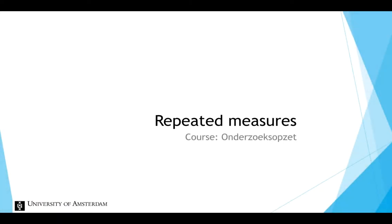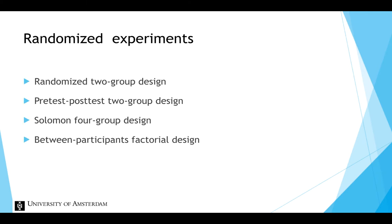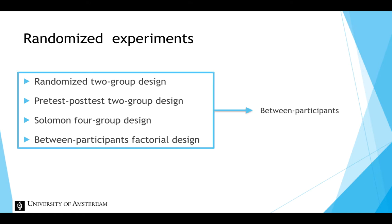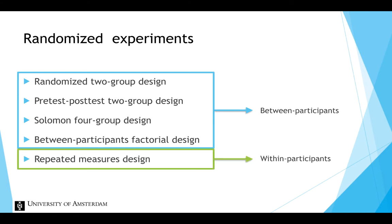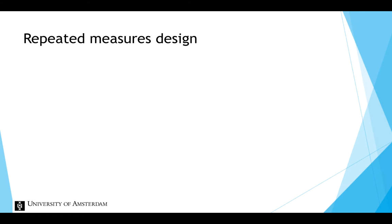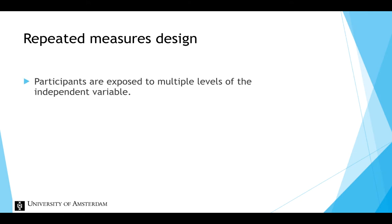In this video, we will discuss repeated measures designs. Earlier, we discussed four randomized experimental designs where the independent variable varies between participants. But in a repeated measures design, the independent variable varies within participants. Rather than assigning participants to different levels of the independent variable, in a repeated measures design, participants are exposed to multiple levels of the independent variable.